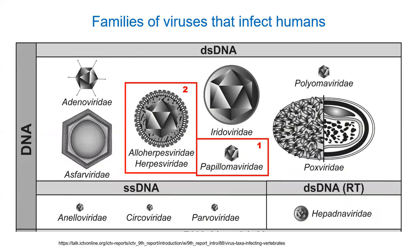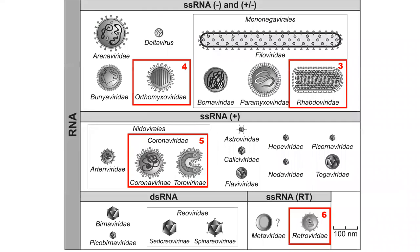Here is the list of viruses we're going to talk about in this unit. Family one is the Papillomaviridae. Family two is the Herpesviridae — we've talked about them a little bit already. Both of those are DNA viruses. Group three is the Rhabdoviridae, which includes the rabies virus. Group four is the Orthomyxoviridae, which includes the influenza viruses — the flu virus. Family five is the coronaviruses. Family six are the retroviruses, including HIV.